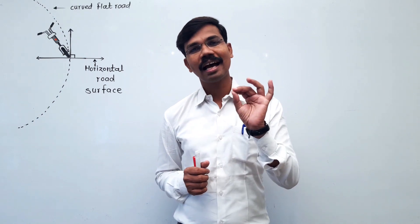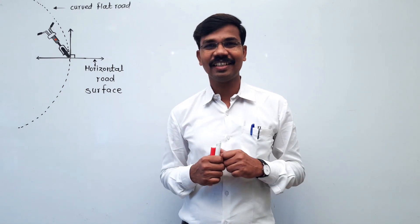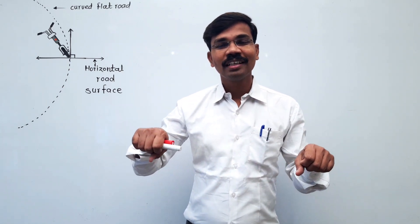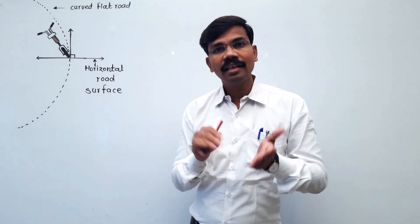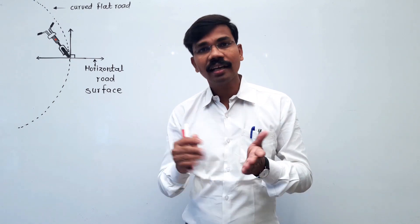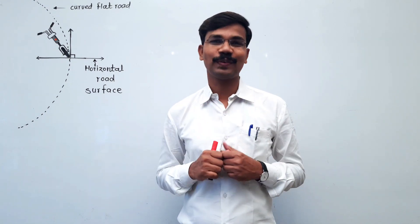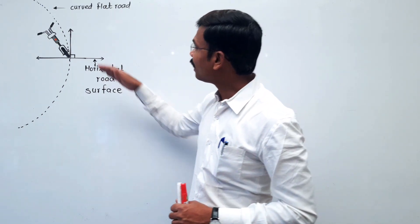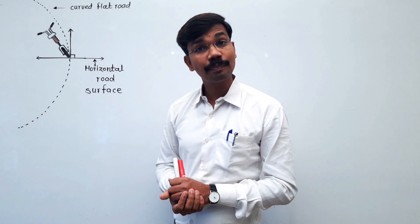Let's say that this force is the centripetal force. In this centripetal force, what is the motorbike rider or bicycle rider doing? The rider leans along the inward direction. If the rider is leaning inward, it is safe. We should consider this angle of lean carefully.